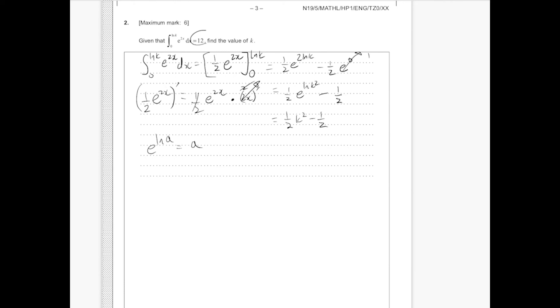And we're told that this equals 12. So 1 half k squared minus 1 half equals 12. So k squared minus 1 equals 24. k squared equals 25. And k, we would usually say it's k equals plus or minus 5. But in this case, we only have k equals 5.